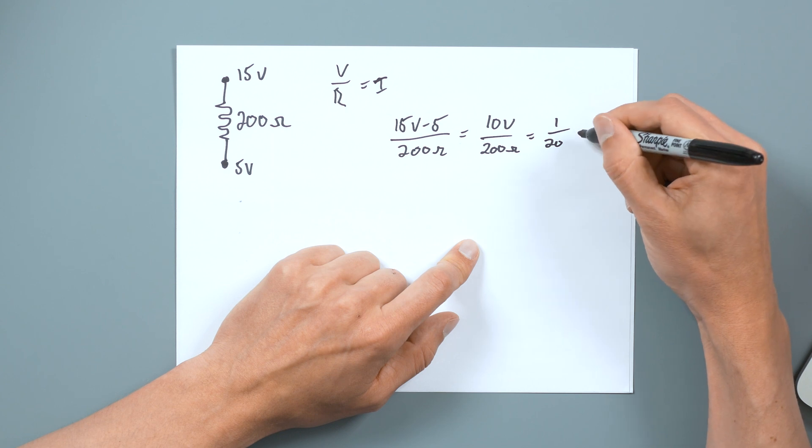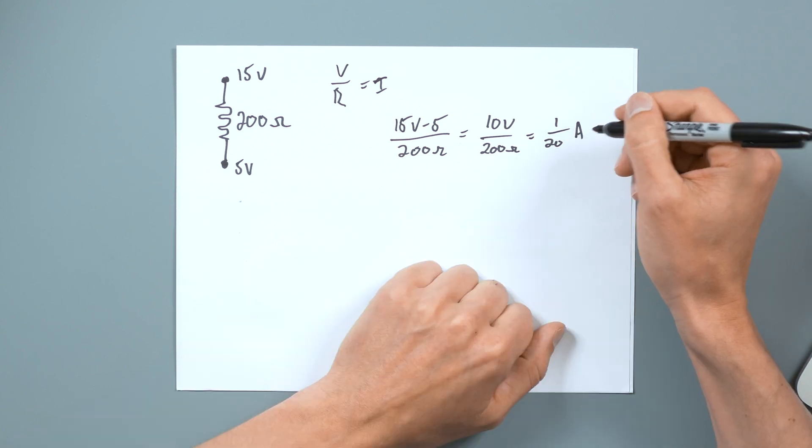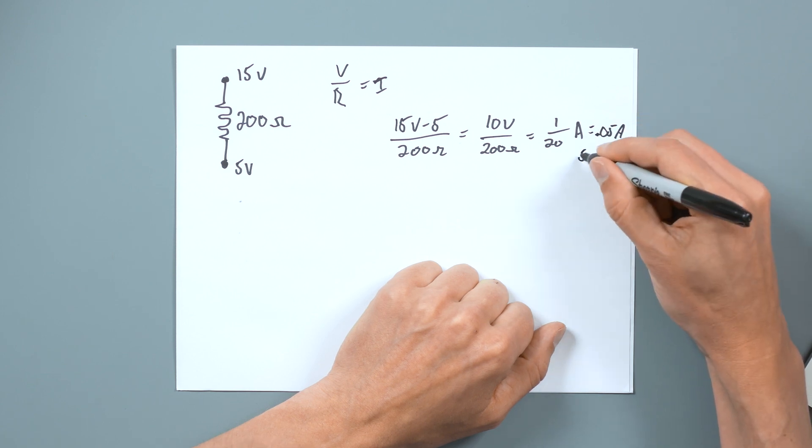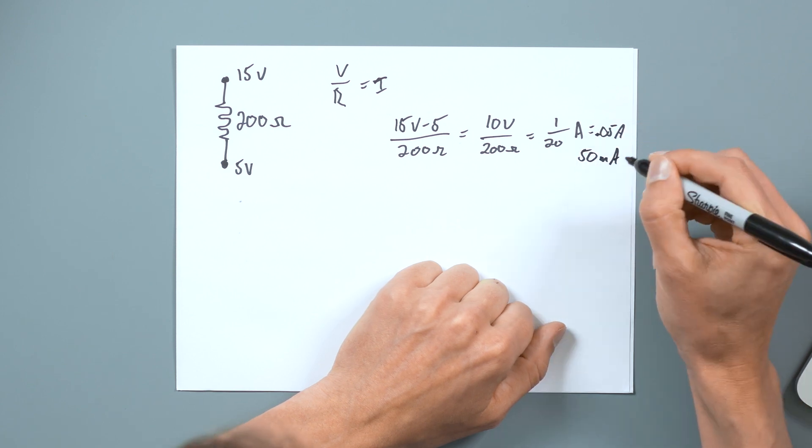So now we're just getting 1 over 20, which is about 0.05 amps, or 50 milliamps.